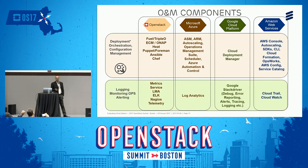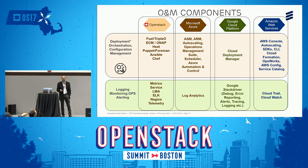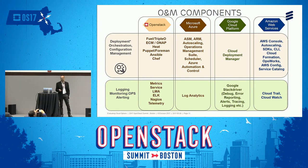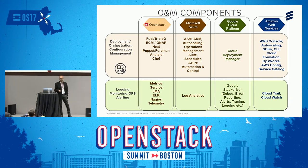Another major area is operations and management components. The two broad categories are deployment/orchestration/configuration management, and logging/monitoring/alerting. For deployment, there are tools like Fuel and TripleO for production deployments, and Packstack or DevStack for learning. That selection needs to be considered carefully when planning the production OpenStack deployment.